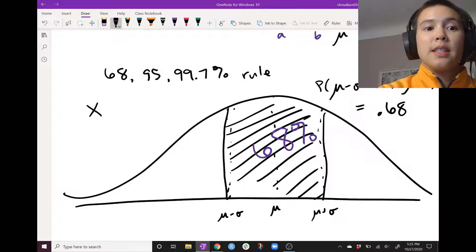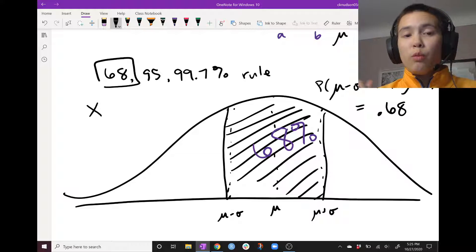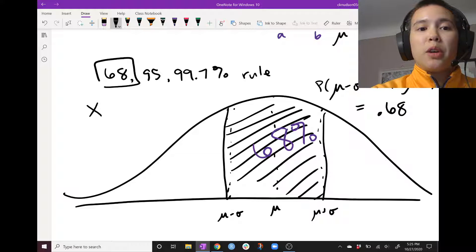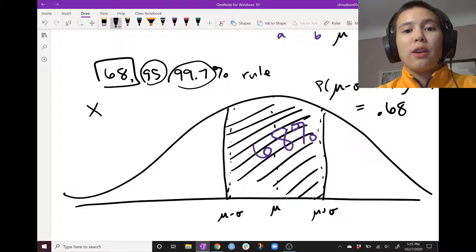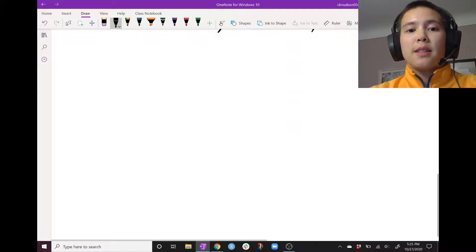So 68%, that's the first one, one standard deviation. When we go to two standard deviations, we'll see 95% roughly, and three standard deviations, we'll see 99.7% roughly. So just drawing those pics here.